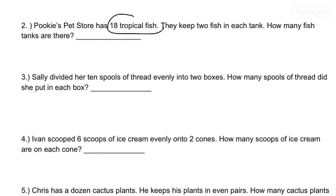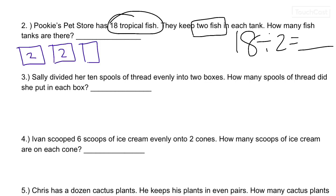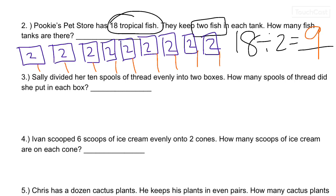Number 2. Pookie's Pet Store has 18 tropical fish. They keep 2 fish in each tank. How many fish tanks are there? So, 18 divided by 2 gives us what? Let's draw a picture. They keep 2 fish in each tank. So let's draw a tank. That's 1 tank and there's 2 fish. Another tank and there's 2 fish. [Counting by 2s to 18]. Stop. How many did we draw? [Counting tanks] 1, 2, 3, 4, 5, 6, 7, 8, 9. Or, can you think of the multiplication? 2 times what gives us 18? Guess what the answer still would be? 9. And that would have been way faster than drawing the picture, but the picture matches.